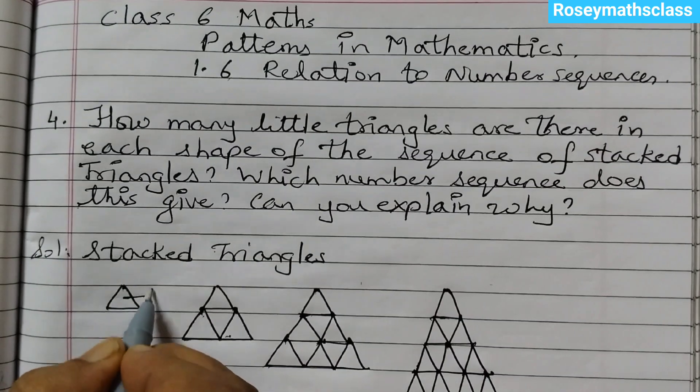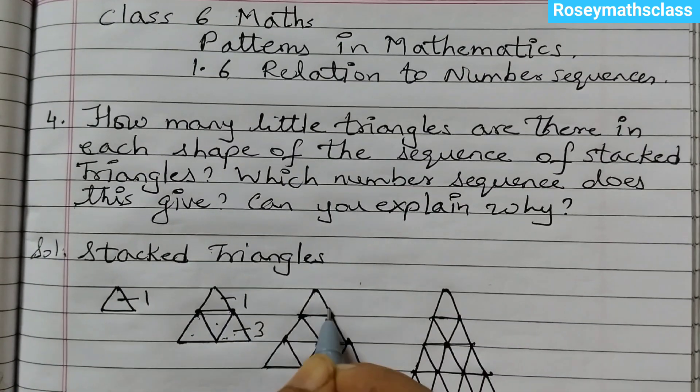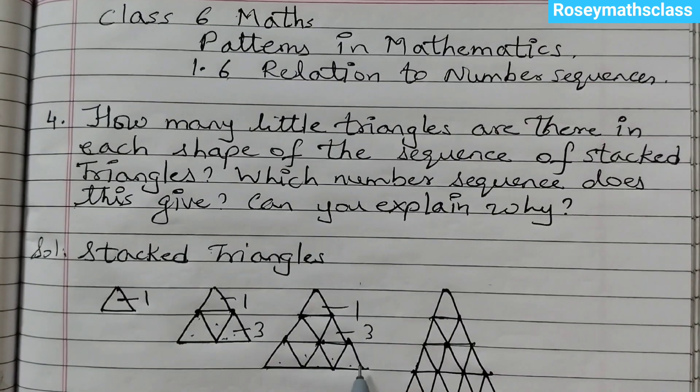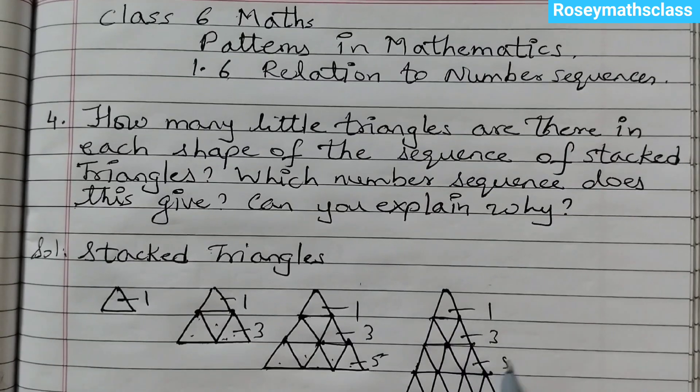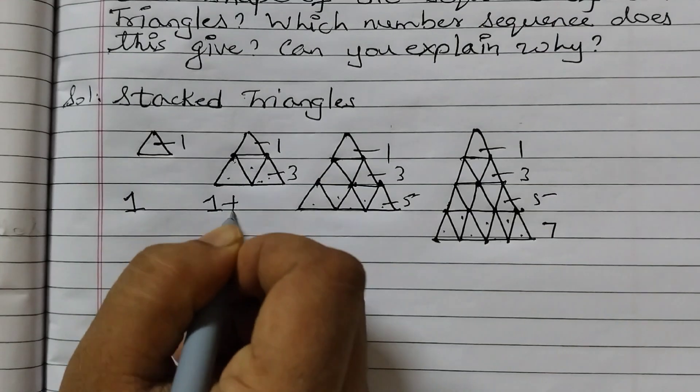Here we have 1, here 1, 1, 2, 3 - that's 3. Then 1, 2, 3, 4, 5. Then 1, 3, 5. Then 1, 2, 3, 4, 5, 6, 7. So first one is 1, this is 1 plus 3 which is 4.